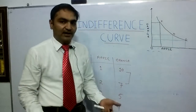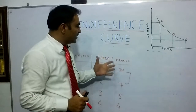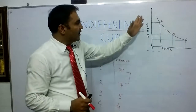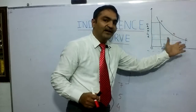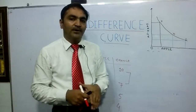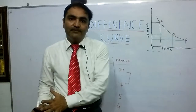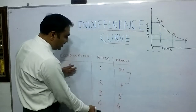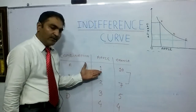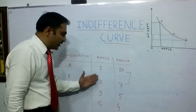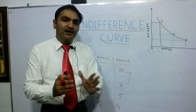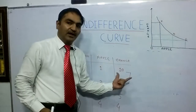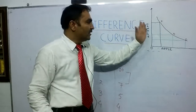This is an indifference curve. Now a question arises: why does an indifference curve have a downward slope? And secondly, why is the indifference curve convex and not concave? I will explain that in my next video on the properties of indifference curve. The key point to understand here is that there is an inverse relationship between the two commodities — as X commodity increases, Y commodity decreases. Because of this inverse relationship between apple and orange, the indifference curve has a downward slope.